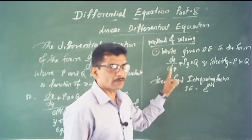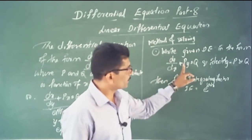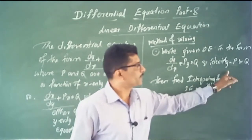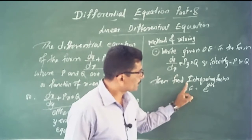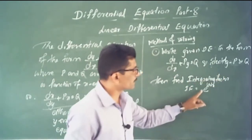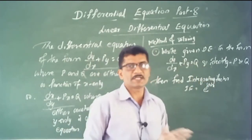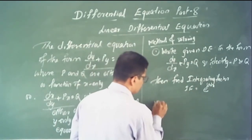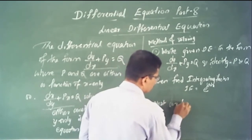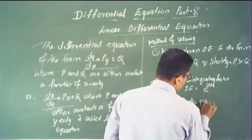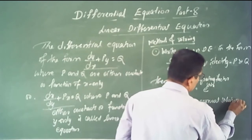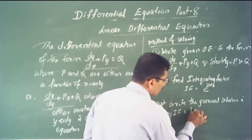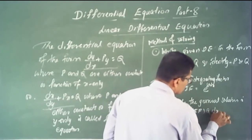Write the given differential equation in the form dy/dx + P·y = Q. Remember, P and Q are either constants or functions of x only. Identify the value of P and Q. Next, find the integrating factor: I.F. = e^(∫P dx). Then write the general solution: y × I.F. = ∫(I.F. × Q) dx + C.